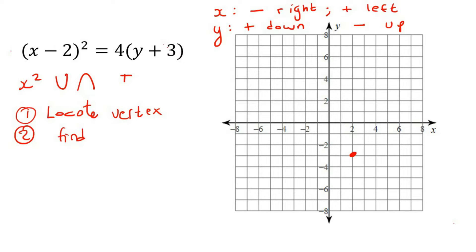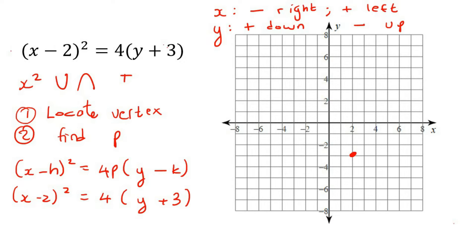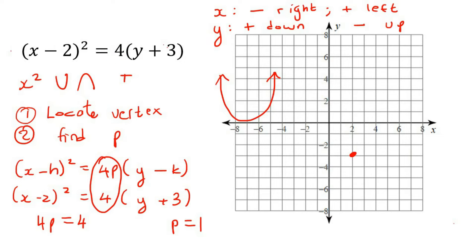Step two: find p. Remember from the previous lesson there's a focus and a directrix, and the distance from the vertex to those points is p. The original equation is (x minus h) squared equals 4p(y minus k). We write our equation and make the two sides equivalent, then solve for p to get 1. So from the vertex, we go 1 up to the focus and 1 down to the directrix.